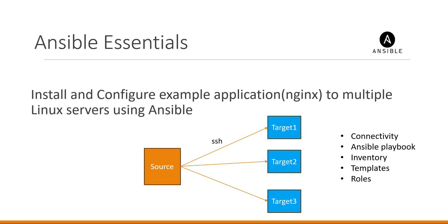Hello everyone. In this video we are going to see how to install and configure an example application to multiple Linux servers using Ansible. In the diagram we have the source machine and we have multiple target machines. We will consider an Nginx application as an example and we will install and configure that Nginx application to all these target servers.